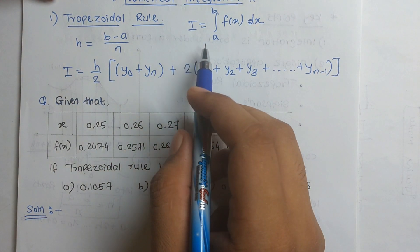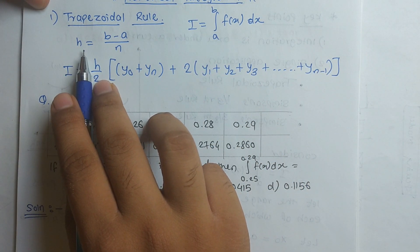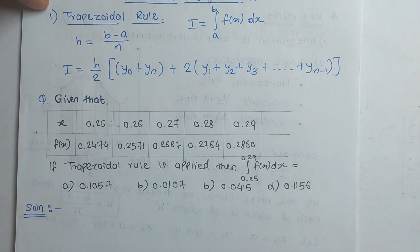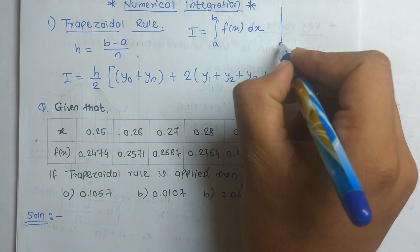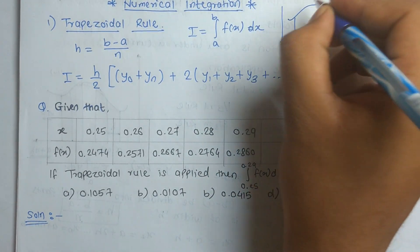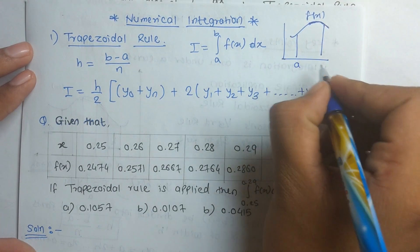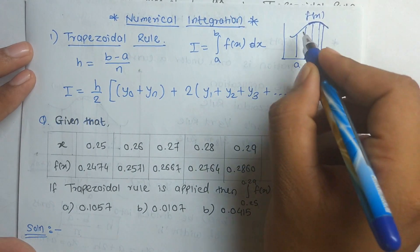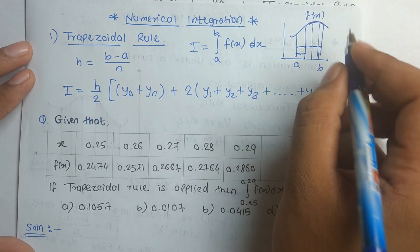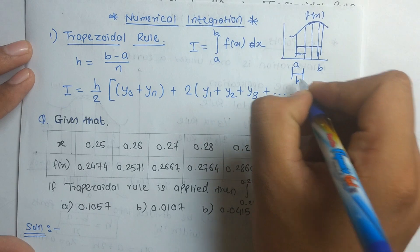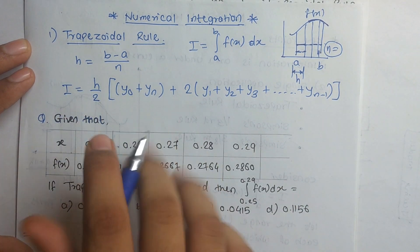The trapezoidal rule is used to find the integration I, which equals the integral from a to b of f(x) dx. We divide the interval into different strips. h is the strip size, equal to (b minus a) divided by n, where n is the number of strips. If we have the curve f(x) with limits from a to b, we divide this section into a number of strips, and the distance between them is h.